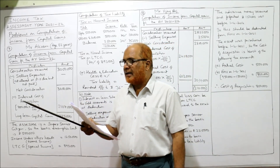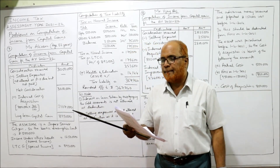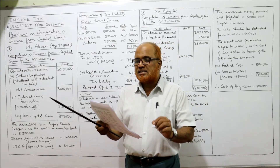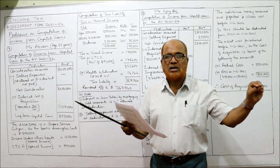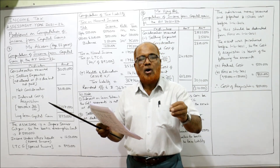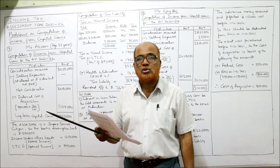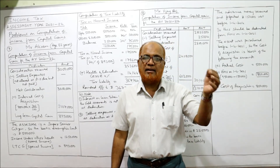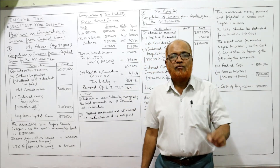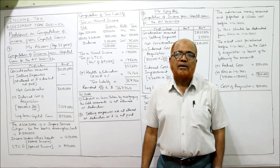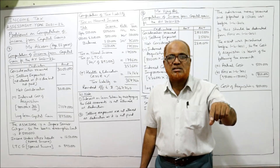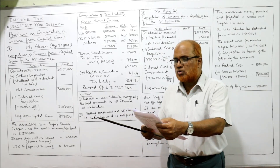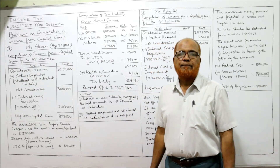He took a loan by mortgaging the ornaments — rupees 5 lakh loan — and interest due up to the date of sale is 92 thousand. The Income Tax Act says if a loan is taken by mortgaging the asset and interest is due, it will not be allowed as a reduction. Simply ignore that. The gold was sold for rupees 30 lakh.